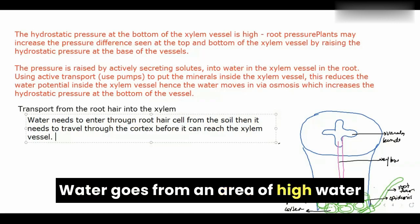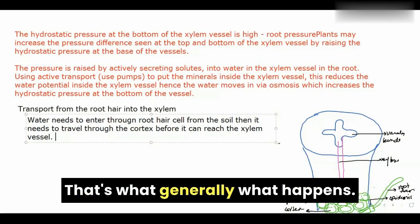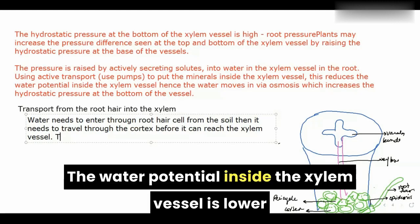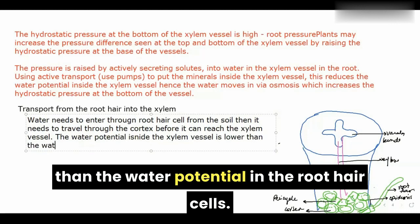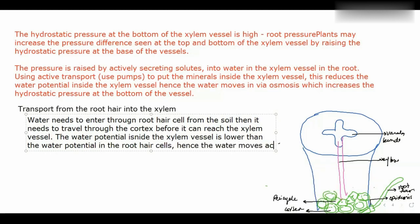Water goes from an area of high water potential to an area of low water potential. Here, the water potential inside the xylem vessel is lower than the water potential in the root hair cells. Hence, the water moves across.